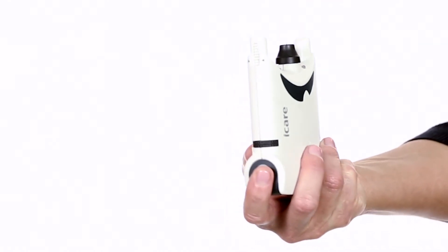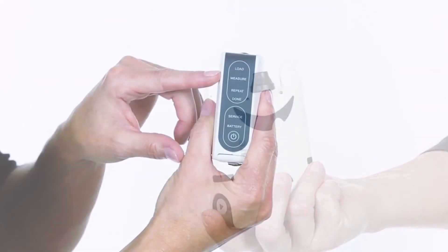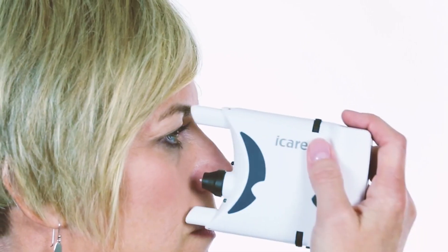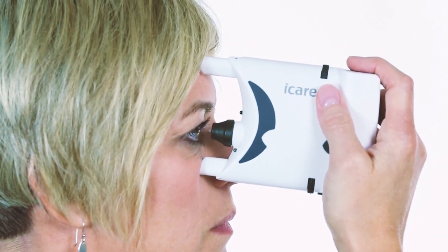Press the measurement button once to activate the probe. The measure indicator will flash when the tonometer is ready. Bring the tonometer near the eye.